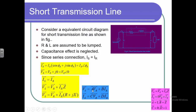So we now have VS and IS expressed in terms of VR and IR. Comparing with the ABCD format — VS = A·VR + B·IR and IS = C·VR + D·IR — we can identify the parameters. By simply remembering these four parameters, we can easily write the VS and IS equations. For the short transmission line, A = 1, B = Z, C = 0, and D = 1.